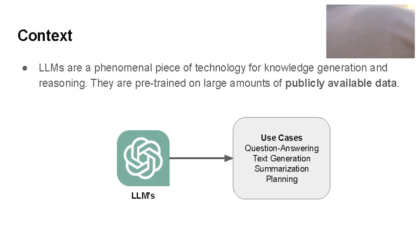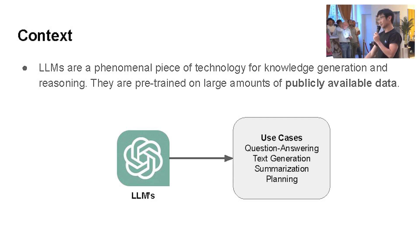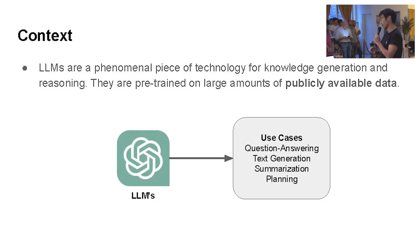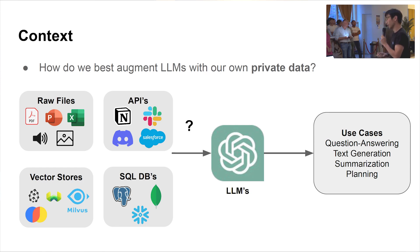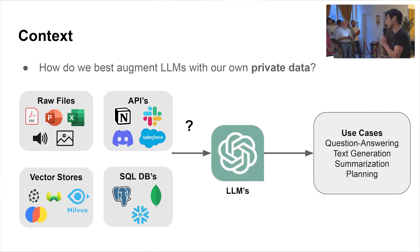RAG stands for Retrieval Augmented Generation. For those who don't know, language models are phenomenal — they're really good at reasoning, but they have a knowledge cutoff date, especially for ChatGPT, which was trained around 2021. So the key question for every developer is: how do you best augment language models with your own private data — your PDFs, APIs, vector DBs, SQL databases?